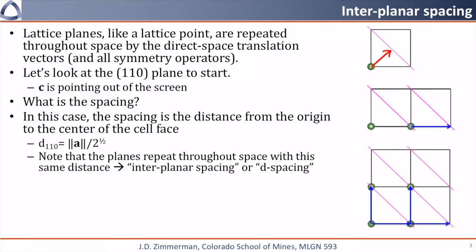You can use simple geometry to determine that this distance will simply be the magnitude of a, the lattice translation vector, divided by square root of 2. This distance between planes is the same for all neighboring planes and is often referred to as the interplanar spacing or the d-spacing.